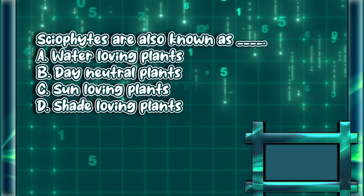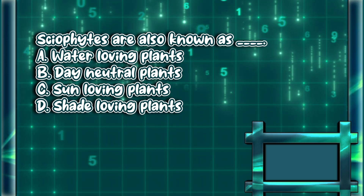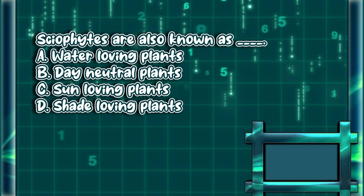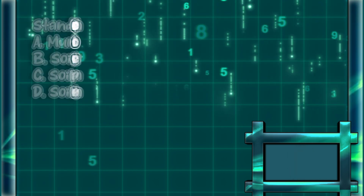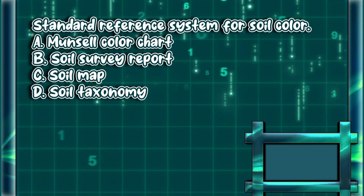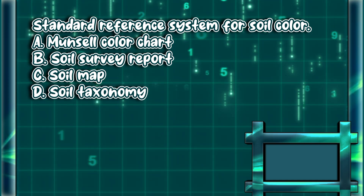Sciophytes are also known as: A) water-loving plants, B) day-neutral plants, C) sun-loving plants, D) shade-loving plants. The answer is letter D. The standard reference system for soil color is: A) Munsell color chart, B) soil survey report, C) soil map, D) soil taxonomy. The answer is letter A.